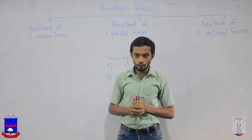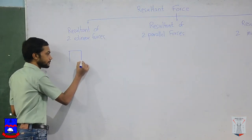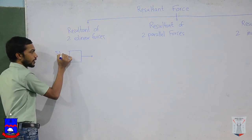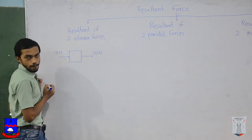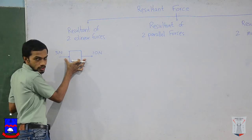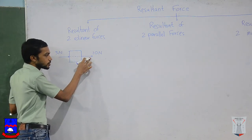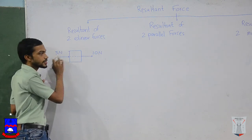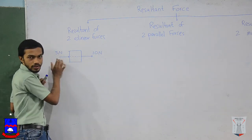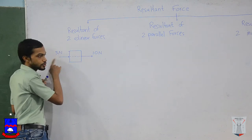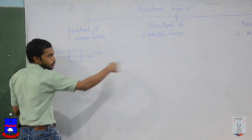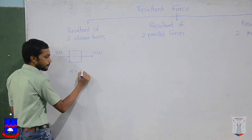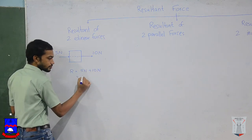Let's move on to resultant of two collinear forces. Let's say you have an object, and forces are applied — 5 newtons here and 10 newtons here. These two forces have the same line of action, meaning they act in the same line, so we call them collinear forces. When finding the resultant of two collinear forces, first check the direction. Here, 5 newtons is towards the right and 10 newtons is also towards the right. As the direction is the same, you add these two. So the resultant force will be 5 newtons plus 10 newtons, which is 15 newtons.